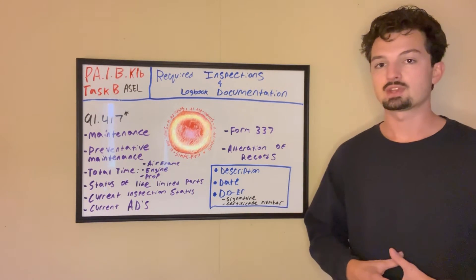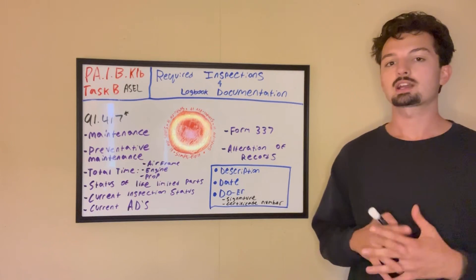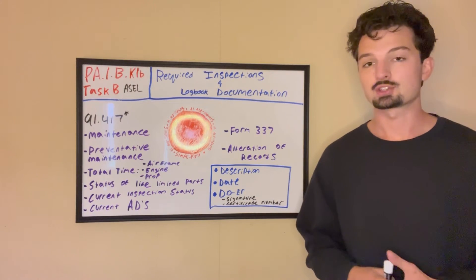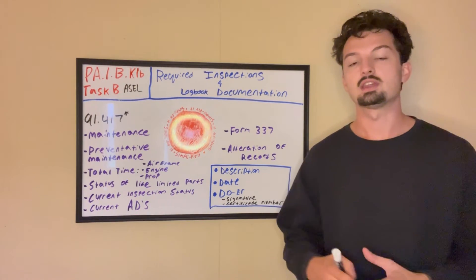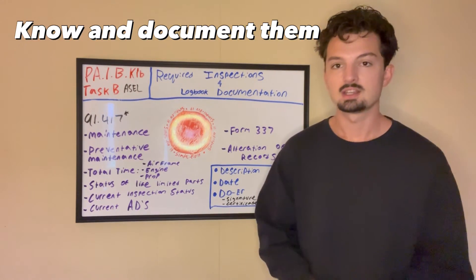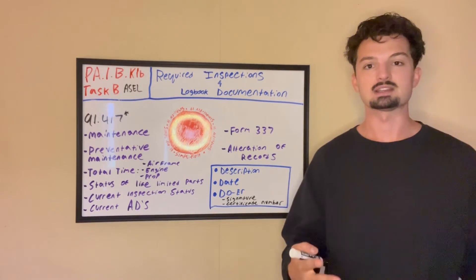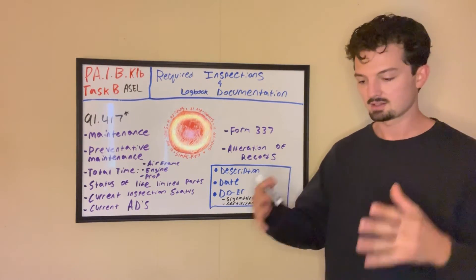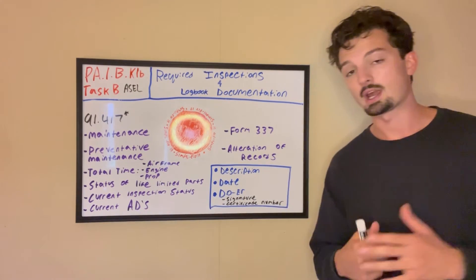You want to document the total time for the aircraft, including its total time for components of its airframe, engine, and propeller. You want to keep a documentation of the status of life-limited parts. These are parts that are installed in the plane and after a certain amount of hours used or a certain amount of years in the plane, they are not allowed to be used anymore because of corrosion or structural failure, whatever it may be. You want to know the status of those parts as well. You want to have your current inspection status logged in the maintenance logbook. You want it to be the most updated, up-to-date condition of your plane.